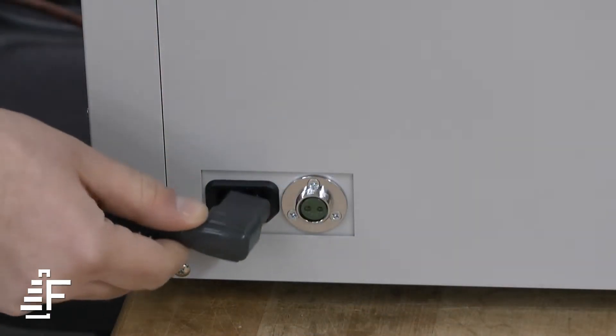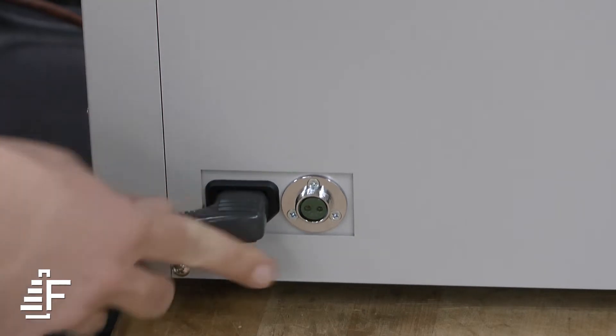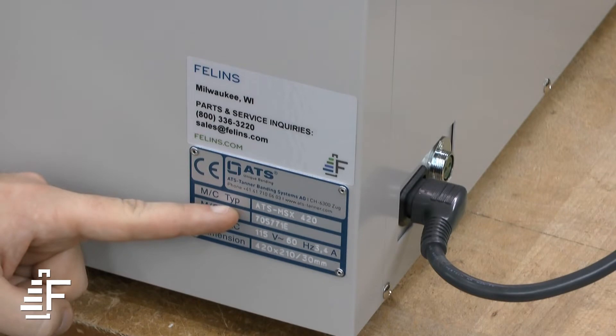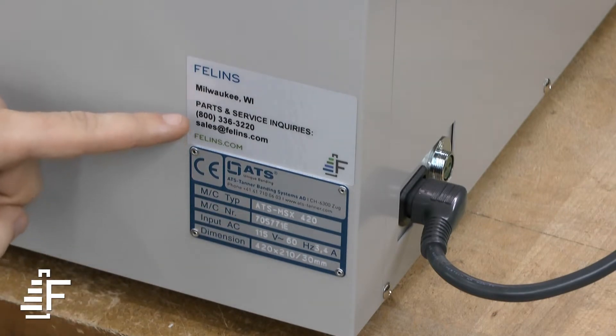The power cord will be installed here in this plug and this one's for an optional foot trip. The serial number is located on the ID plate here and on the service tag is our phone number if you have any questions about parts or service.